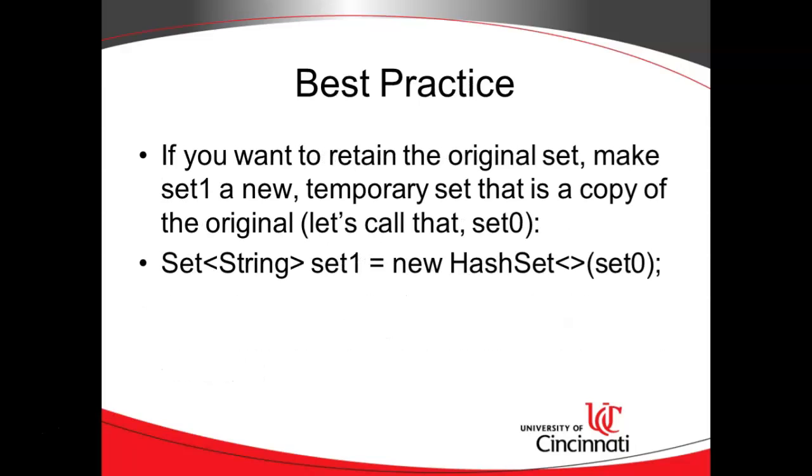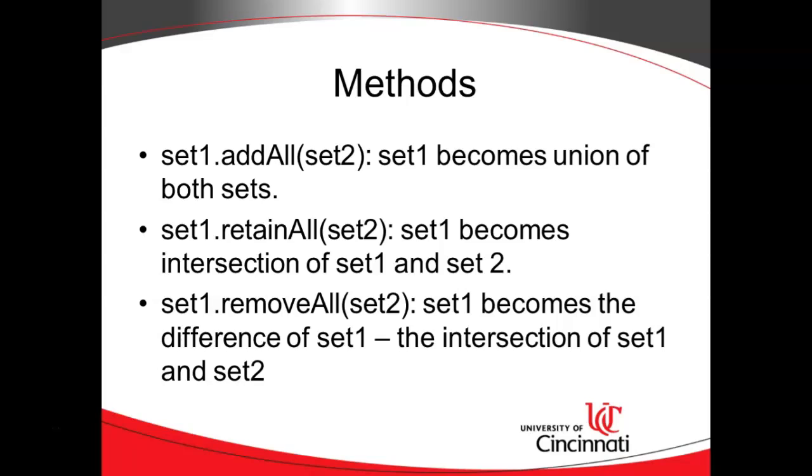A best practice here is that you're actually changing set1 in this case. So many times you want that set1 to be a temporary set if you just want to look at a union or an intersection of two sets. Let's say that we actually want to compare set0 and set2. What we might want to do is create this temporary set1, and we create this temporary set1 by passing set0 into the constructor call for our hash set object. What that means is that set1 is going to be a copy of the items in set0. Set0 will not change. Even as we perform these operations on set1, set0 still has all of the original members. So it's important to consider doing that if you don't actually want to lose what's in set1.